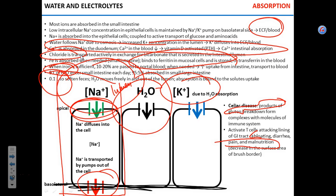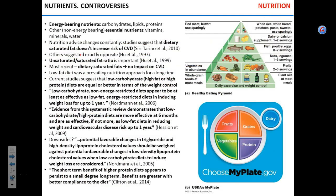Is there a benefit to generally avoiding gluten? There are no scientific studies suggesting that avoiding gluten-containing food is beneficial for people without celiac disease. If you stop eating two loaves of bread a day, that's probably good because you're consuming fewer carbohydrates — but gluten avoidance by itself doesn't carry health benefits.